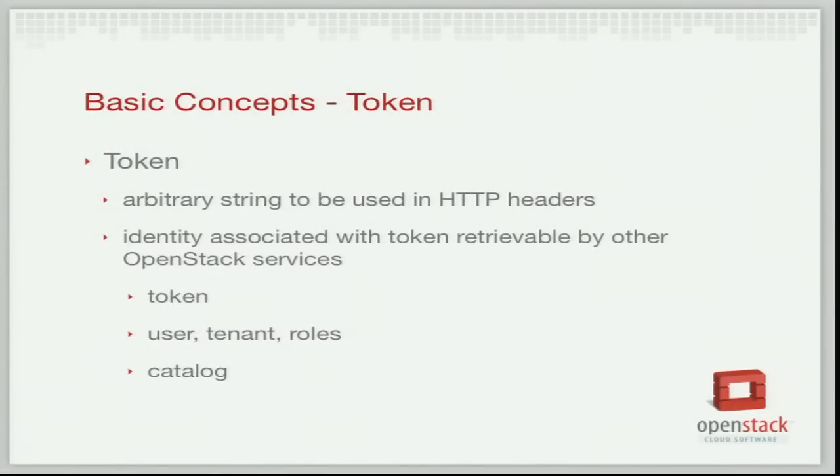The token is just an arbitrary string. At most basic it's a fairly short string - in the future, a much larger string - that you just put in an HTTP header and pass around with your requests. The client asks for it, whether it's a CLI client or the dashboard. The reason the token is going to become a longer string is because in this latest release, one of the things we did was enable tokens to be PKI-signed entities. That string went from just a simple UUID to an entire signed PKI token, which we can extract a lot more information from. It really sets the stage to make some nice advancements in the future.